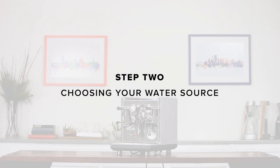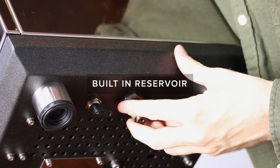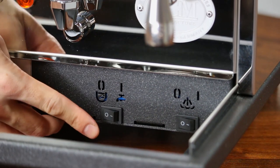Step 2. Choosing your water source. For water, the Synchronica can use either the built-in reservoir or a plumbed-in line. If you plan on using the reservoir, make sure the water source knob underneath the machine is in this position and the water source switch under the drip tray is set to reservoir.